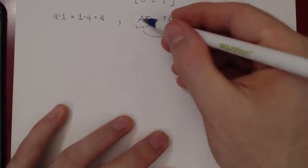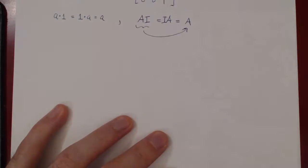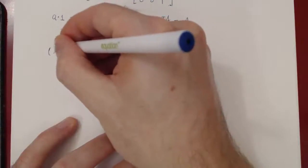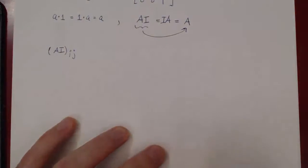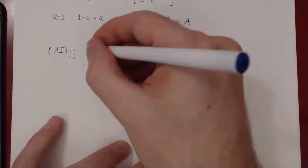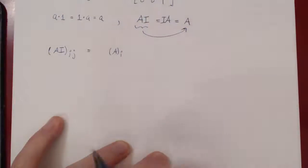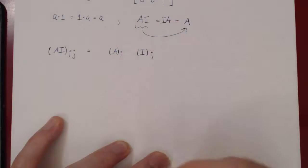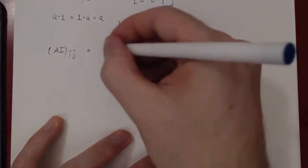Let's prove that A times I equals A. How do we prove that matrices are equal? Very simply, if they have the same corresponding entries. So consider any entry of AI — the entry in the i-th row, j-th column of AI is the i-th row of A times the j-th column of I. We multiply corresponding entries and add them up.